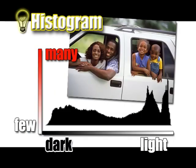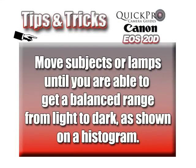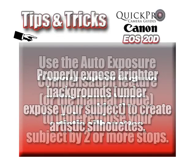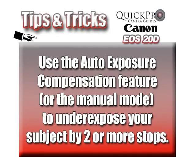A great photo will show a full range of light, from highlights to shadows, as shown in the histogram of that image. Direct your subjects and light your scene, if possible, until you can achieve a great balance of highlights, mid-tones, and shadows in your picture. Use backlight to create silhouettes when desirable. Use either auto-exposure compensation in any creative mode or the manual mode to achieve this.